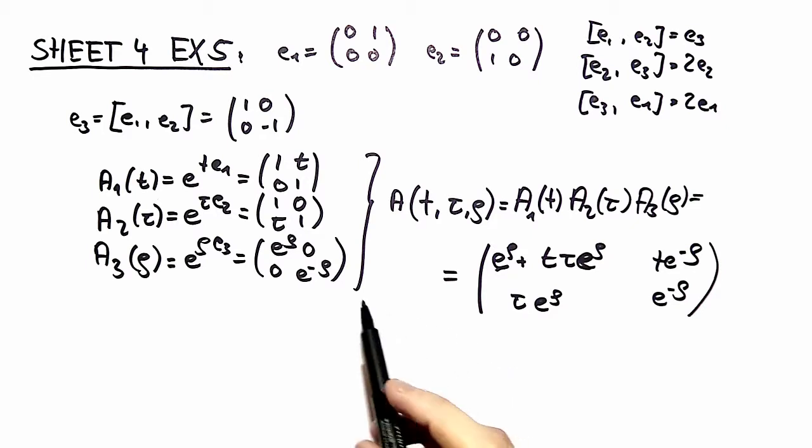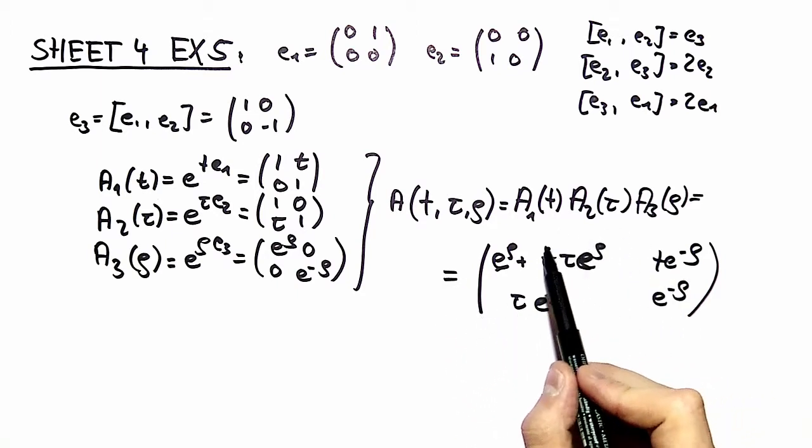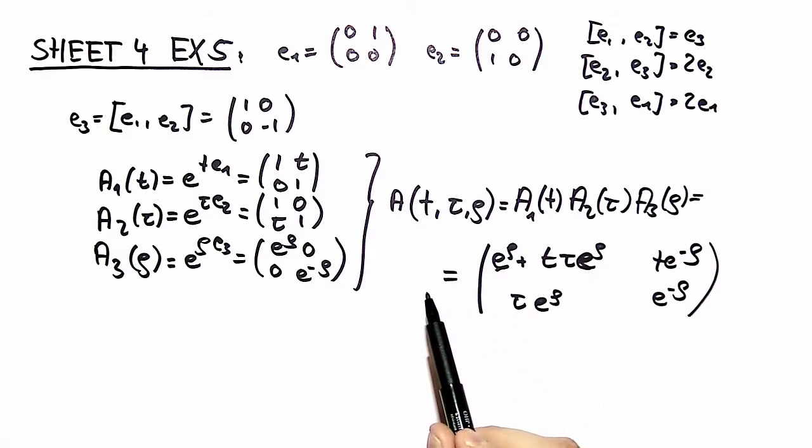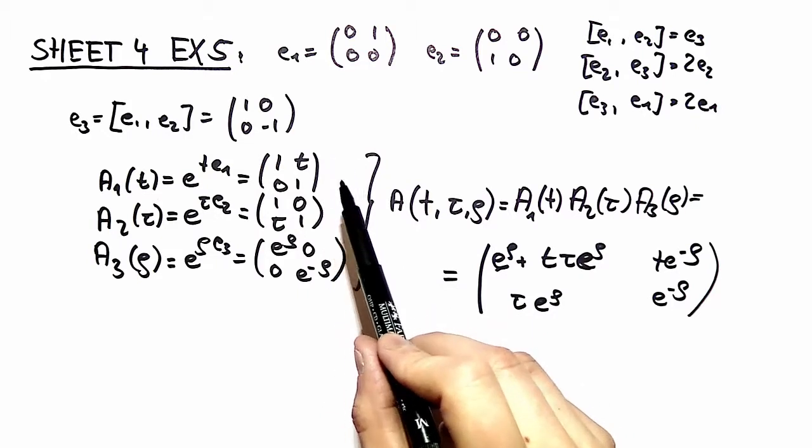So this Lie group SL2R are all matrices with real matrix elements and determinant plus one. SO2 for example is a subgroup of this group, so you can think of the SL2R as a generalization of rotations.